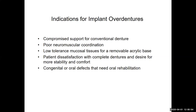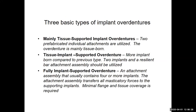Indications for implant overdentures include compromised support on the conventional denture, poor neuromuscular coordination including occlusion, low tolerance of mucosal tissues for removable acrylic bases, sore spots requiring lots of adjustments, patient dissatisfaction with complete dentures and desire for more stability and comfort, and congenital and oral defects requiring oral rehabilitation. There are three basic types of implant overdentures: mainly tissue-supported with two prefabricated individual attachments; tissue-implant-supported with more implant-borne design using a resilient bar assembly; and fully supported.